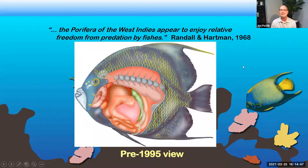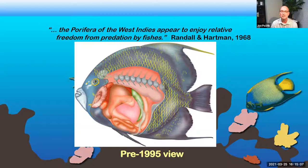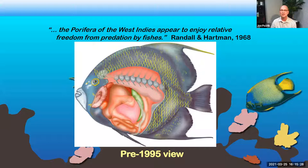In the 1960s, they spearfished thousands of reef fishes of many different species, gutted them, and examined what was in their guts. What they determined was that only a handful of species — mostly angelfish — were sponge-eating fishes. When Willard Hartman determined what species were being eaten, he saw a combination of several species represented. Between the two of them, they concluded that the net impact from so few species over many different sponge species was essentially minor and really didn't affect the community of sponges.